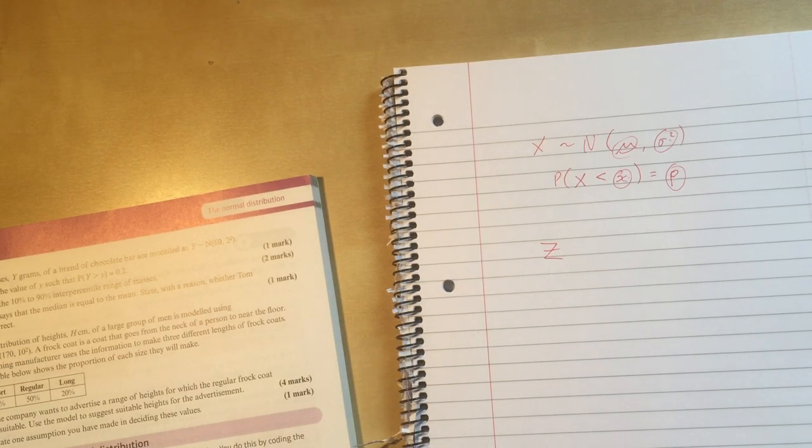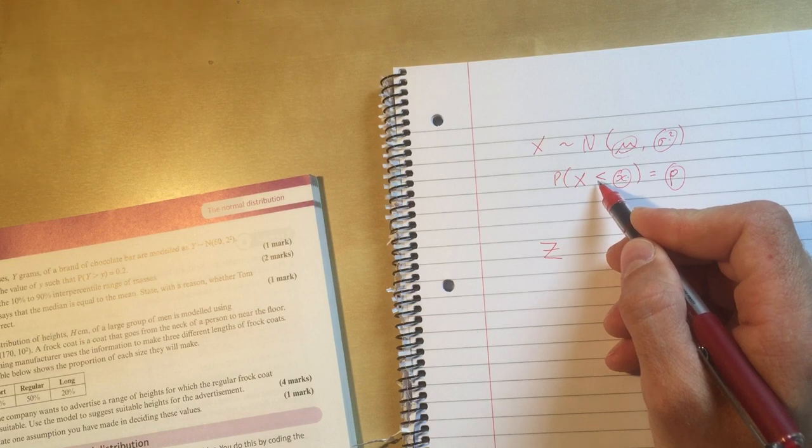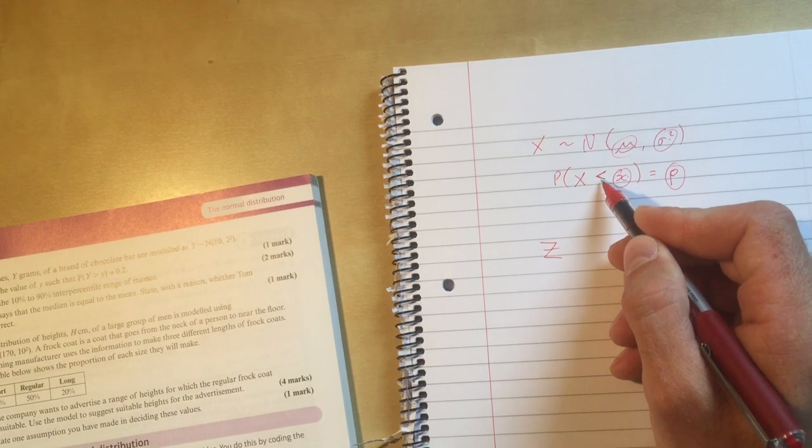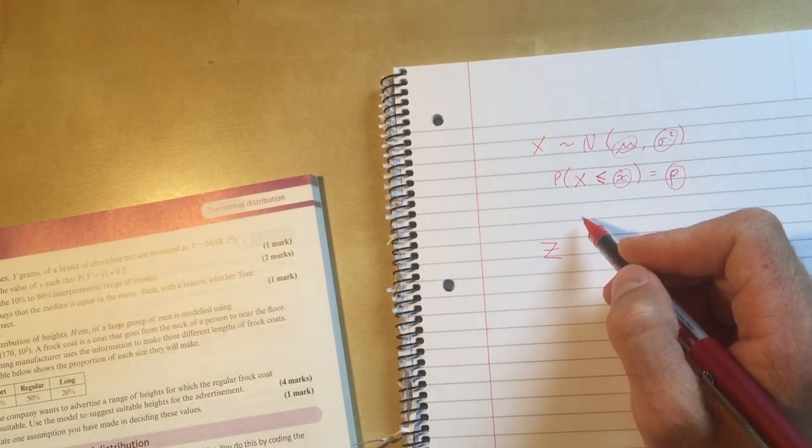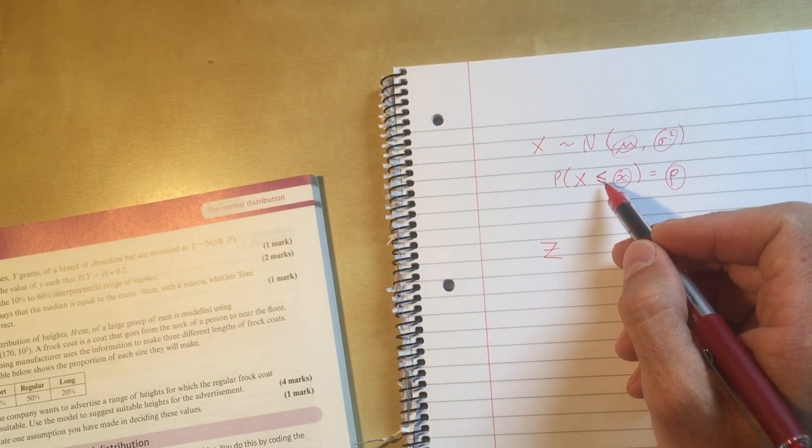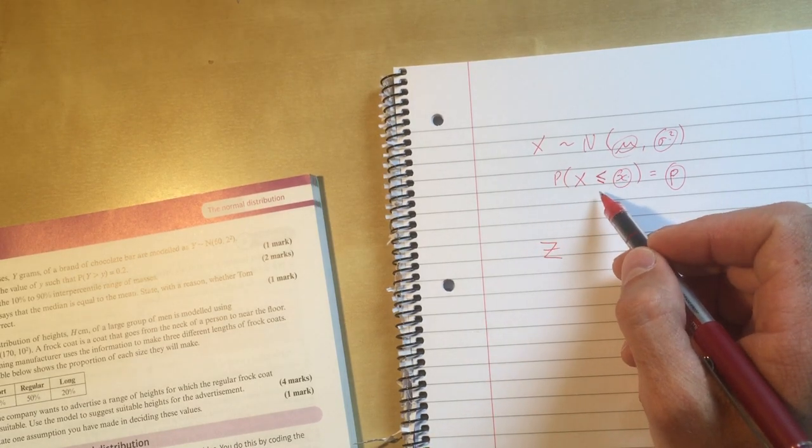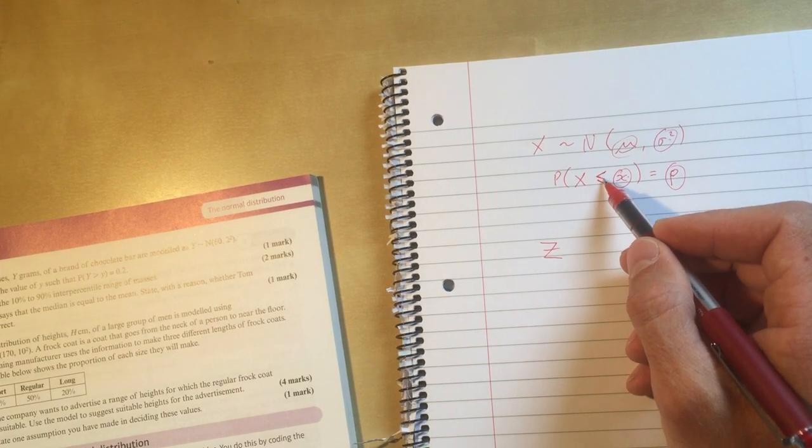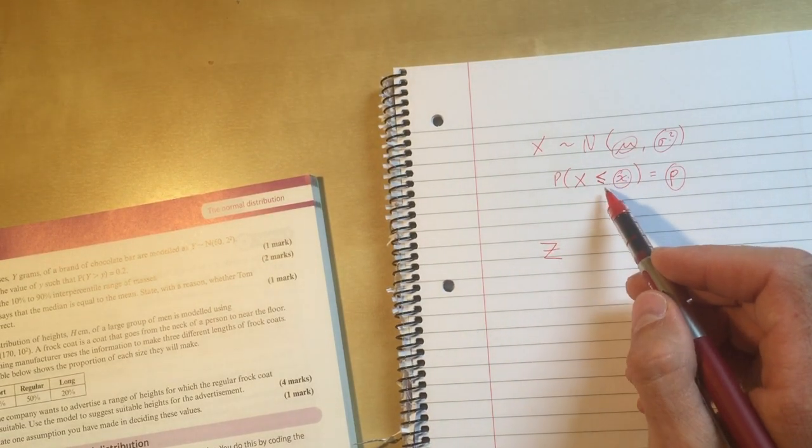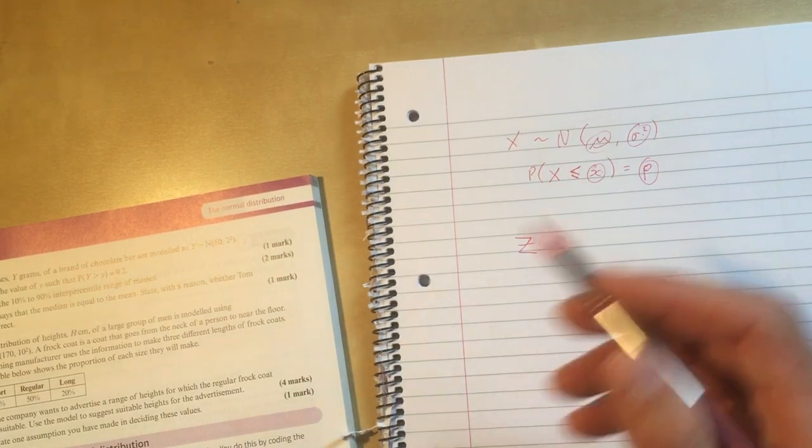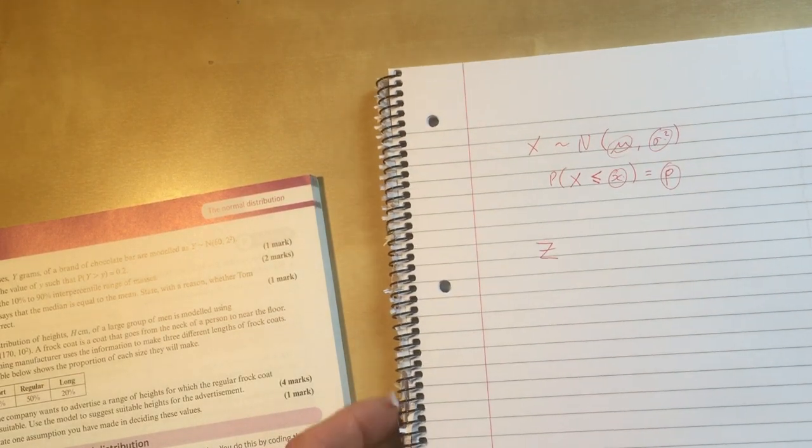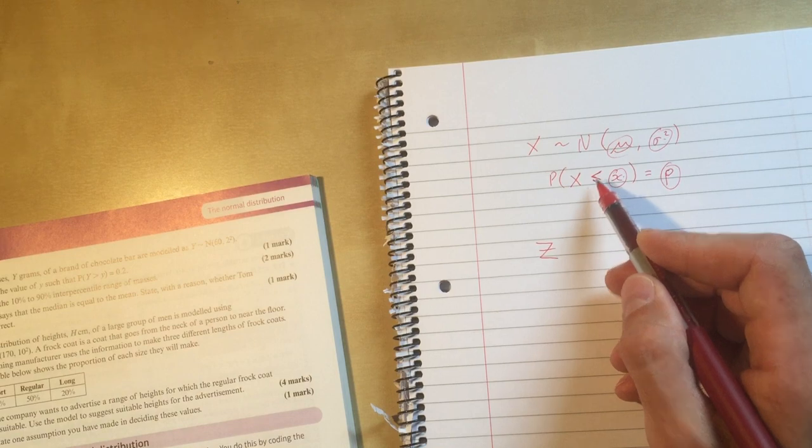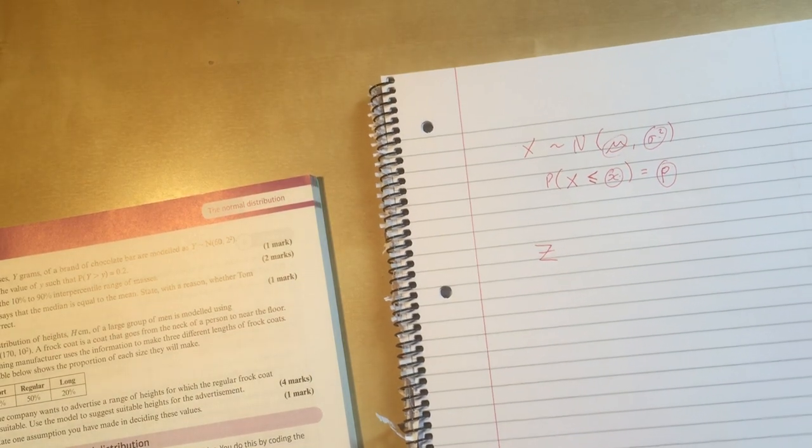Before I go any further, there is something I should mention. It doesn't matter if that symbol is a less than or a less than or equal to. It won't change our method at all, because this is continuous distribution. It's not a discrete distribution. So if that's a less than or a less than or equal to, we treat the question exactly the same. Obviously, if it's a greater than, then we're looking at a different area. So we deal with it slightly differently. But just realize that's something I've not mentioned so far.